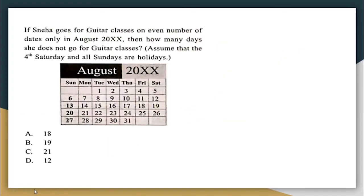If Sneha goes for guitar classes on even number of days only in August, then how many days does she not go for guitar class? Assume that 4th Saturdays and all Sundays are holidays. Sneha is going to class only on even days. We have to find out which days she is not going for classes. All Sundays are holidays, so definitely those 4 days she will not go to class. The 4th Saturday is also a holiday, so she will not go on the 26th. The other days she will not go: 1st, 3rd, 5th, 7th, 9th.